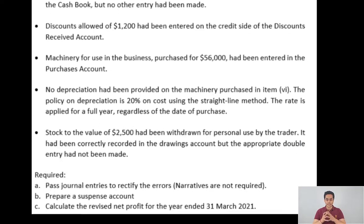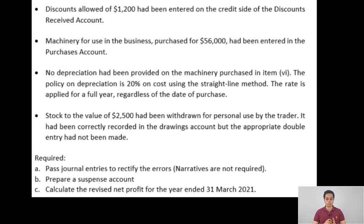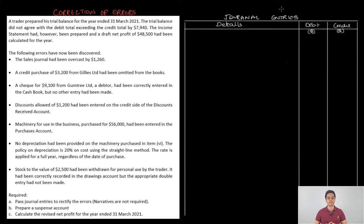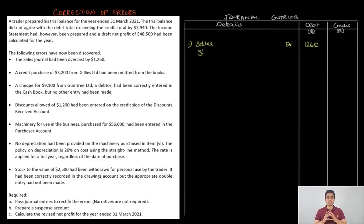A list of errors has been given. We will analyze the errors and go to part one, which says to prepare the journal entries to rectify the above errors. Narratives are not required here, but in an exam, if they tell you to write narratives, make sure you do. The first error says that the sales journal was overcasted by 1260. The practice is that the total of the sales journal is credited to the sales account. When overcasted, extra credit has been given, so we correct it by debiting sales and crediting suspense: Sales Dr, Suspense Cr 1260.